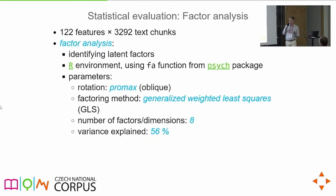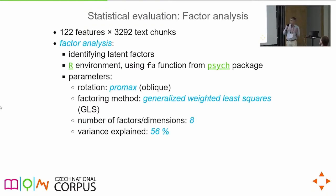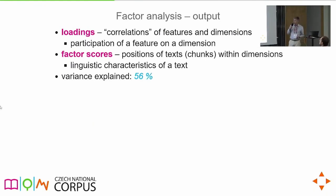After operationalization, you get a large table with 3,292 texts as rows and 122 features as columns. This table is submitted to factor analysis, which gives you factors — or latent factors as statisticians call them — which in multidimensional analysis we call dimensions of variation. These dimensions need to be interpreted using two pieces of information: loadings, which tell us how features are relevant for a particular dimension, and factor scores, which tell us where texts are on that dimension.